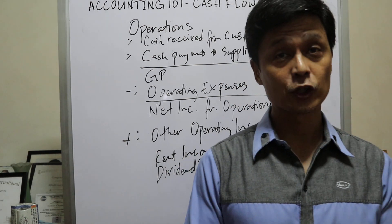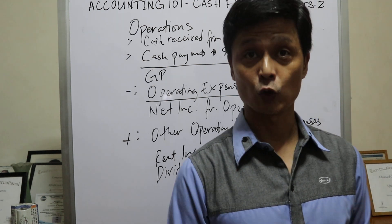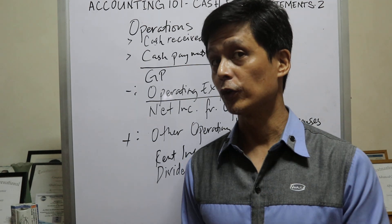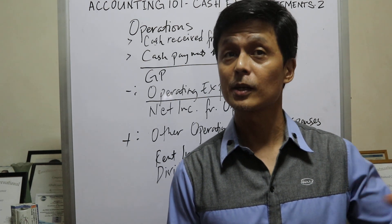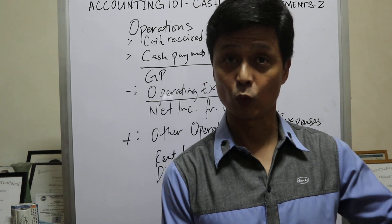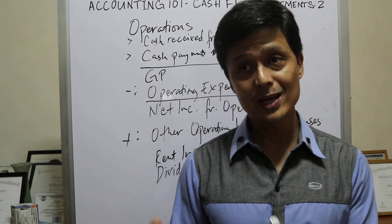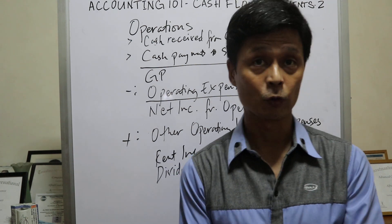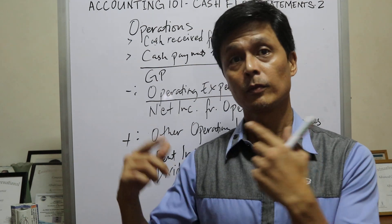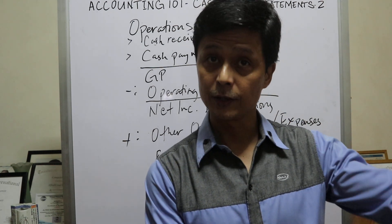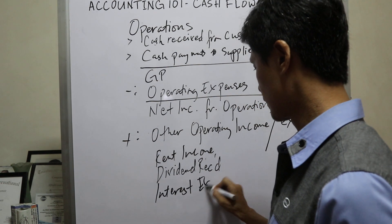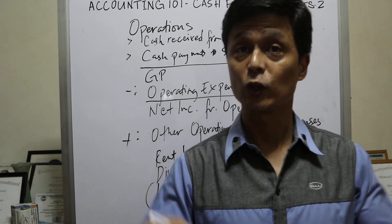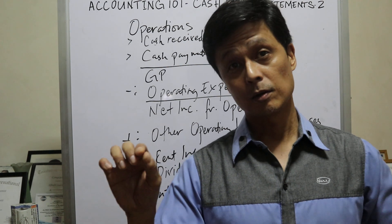Aside from these additions, meron rin deduction yung tinatawag na other operating expenses. For example, meron silang utang sa banko — probably a long-term loan for 1 million na nagbabayad sila ng interest kada buwan. Itong binabayaran nilang interest, yung loan na nakuha nila doon sa banko, ginamit nila doon sa operations of business. So yung binabayaran nila ng interest doon sa banko buwan-buwan — ito yung tinatawag na interest expense. Ito naman, binabawas naman yan, kasi ito yung perang lumalabas doon sa company.